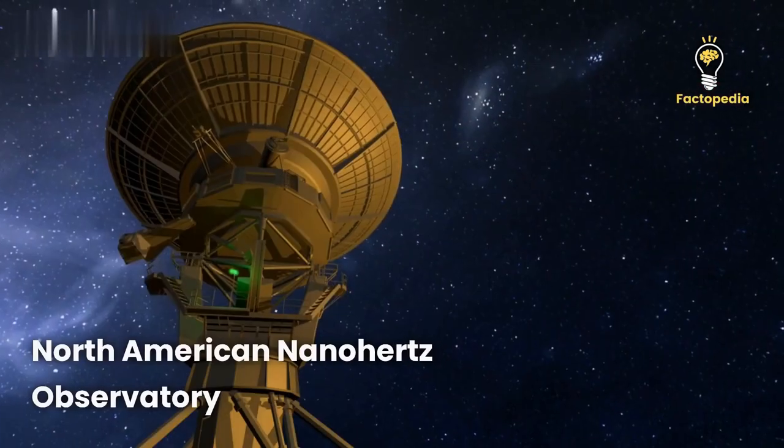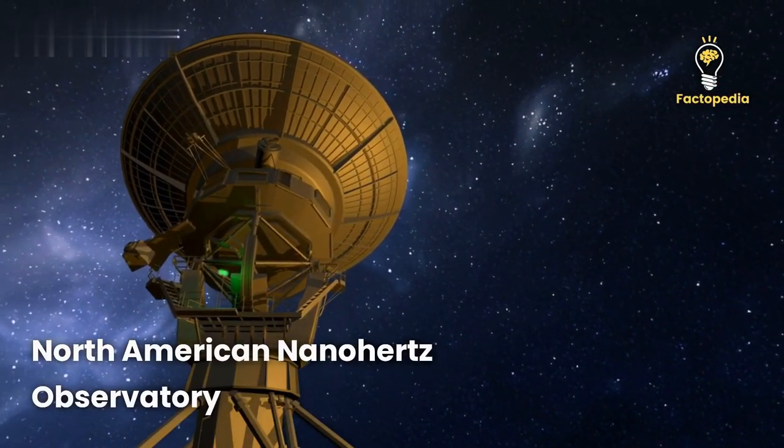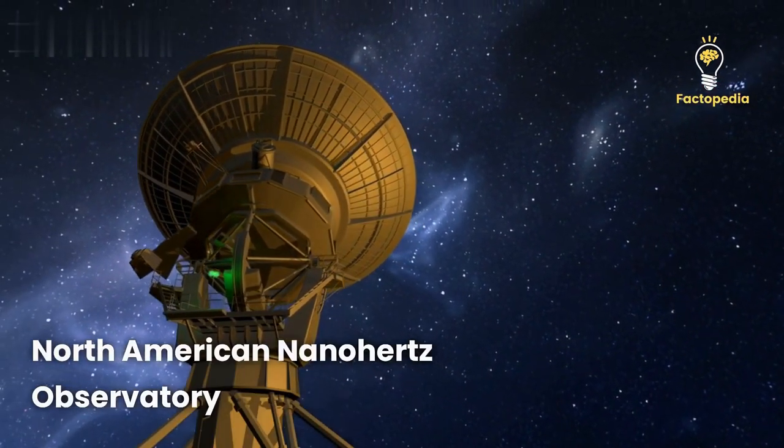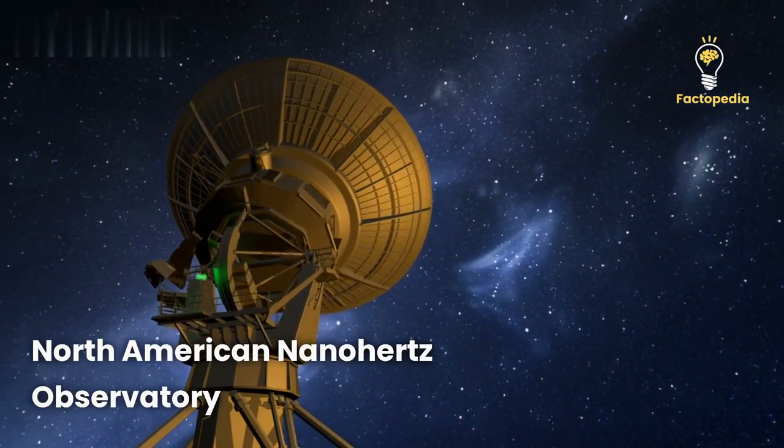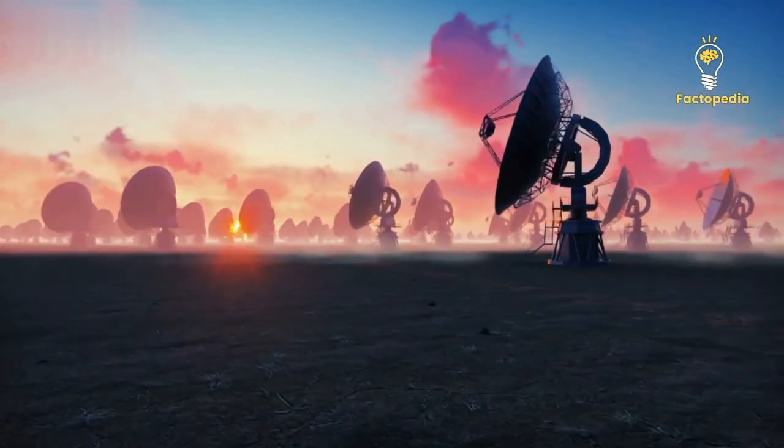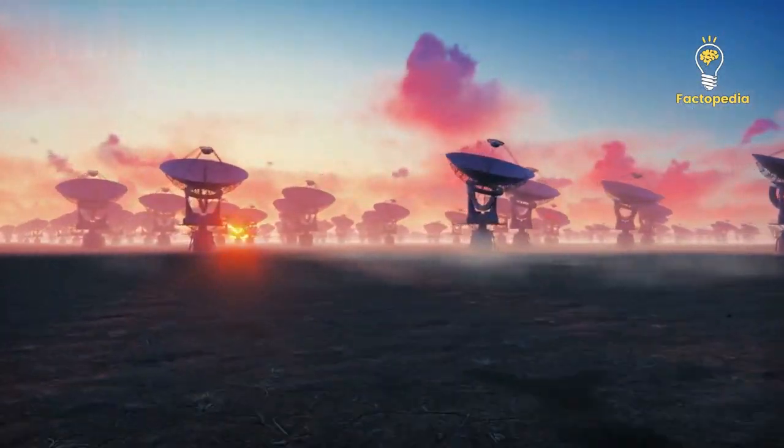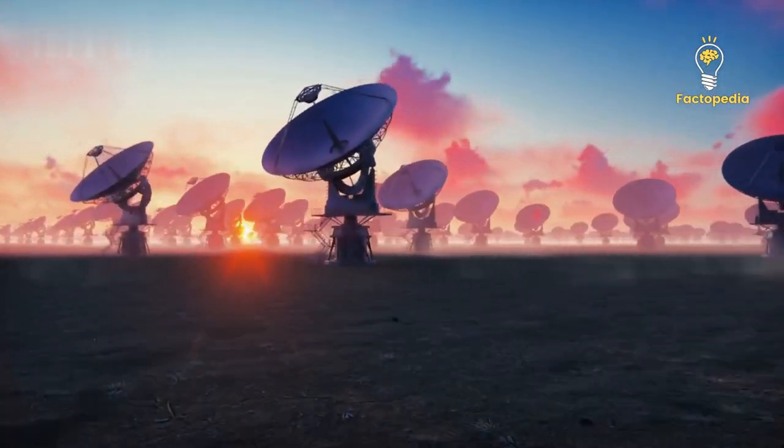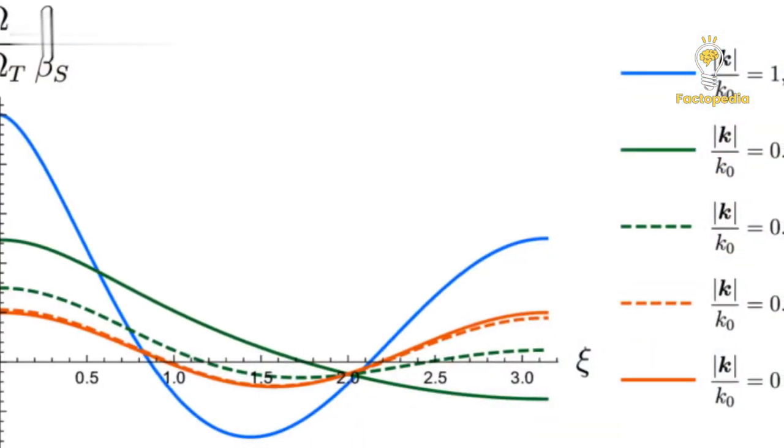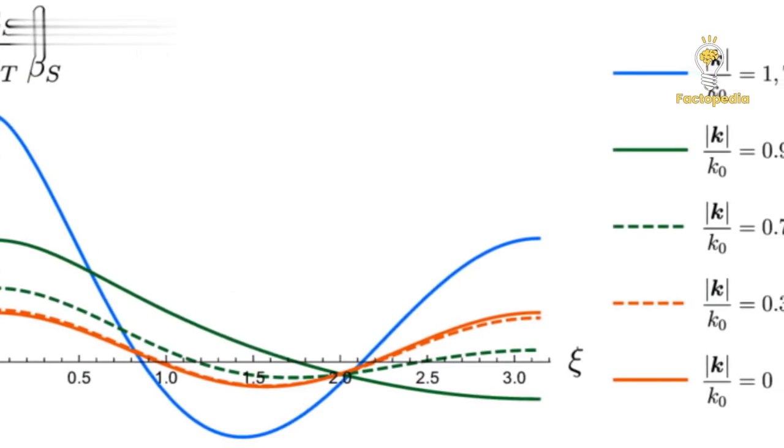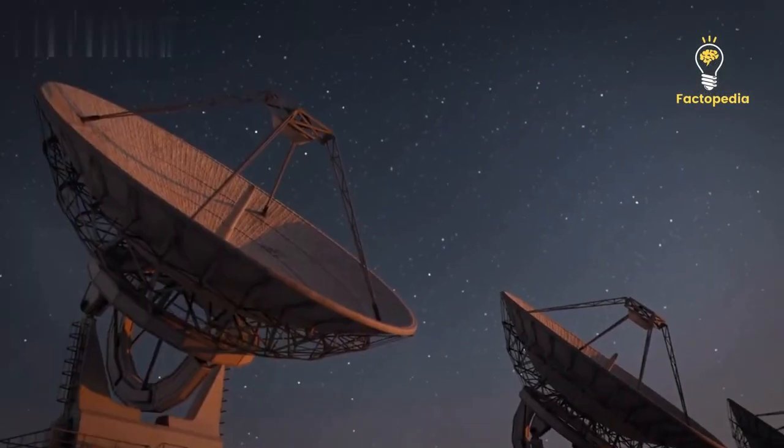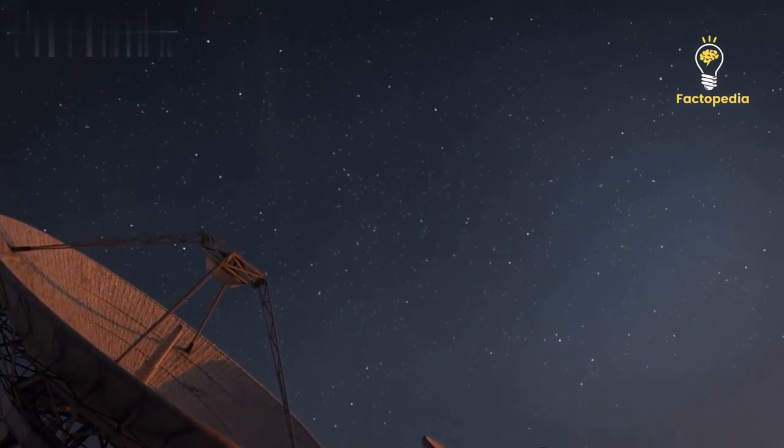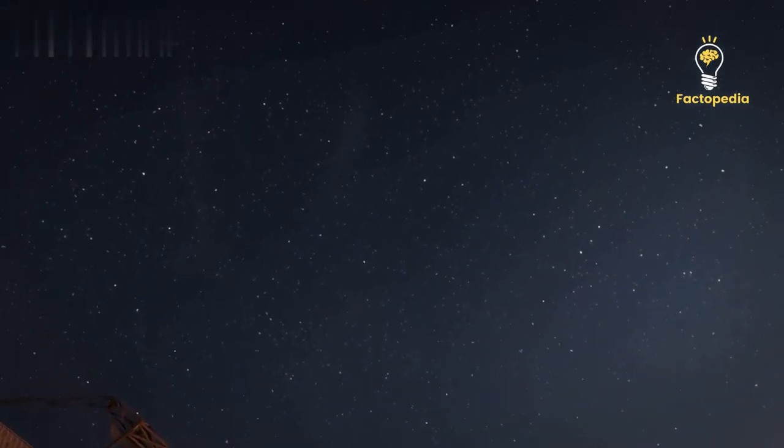Armed with this knowledge, astronomers created the North American Nanohertz Observatory for Gravitational Waves, or NANOGrav for short. They used an array of 67 millisecond pulsars and watched them for 15 years. And guess what they found? The pulsars followed the Hellings and Downs curve. This meant that gravitational waves of nanohertz frequency were indeed reaching us from various regions across the universe.